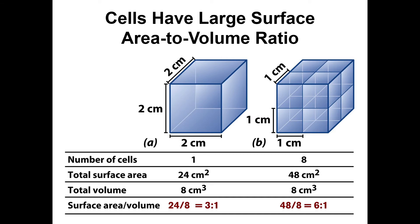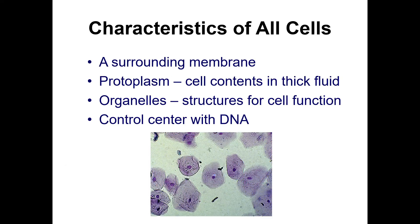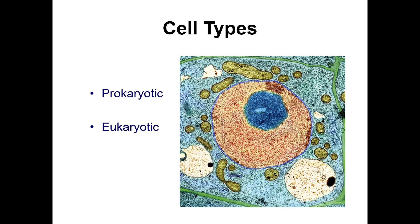Cells have large surface area to volume ratios, meaning they have a lot of surface area compared to the volume inside them — many places on the outside of the cell while remaining small and compact. All cells have surrounding membranes that keep everything inside and keep things out. They have protoplasm, which is the liquid that fills them, organelles which are structures that make the cell function, and some sort of control center with DNA.